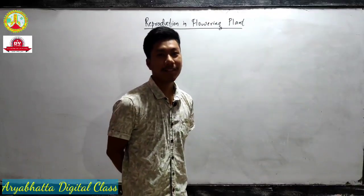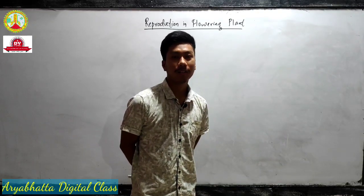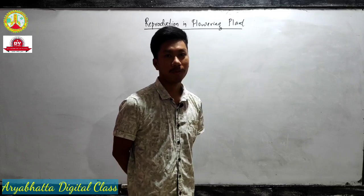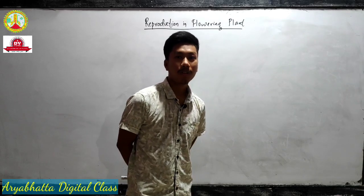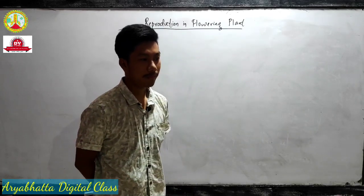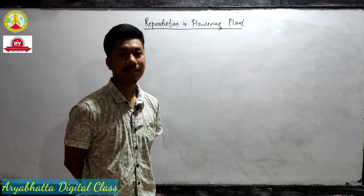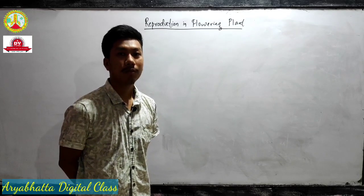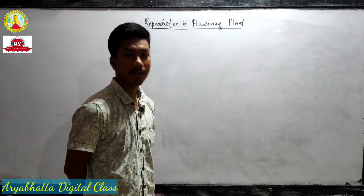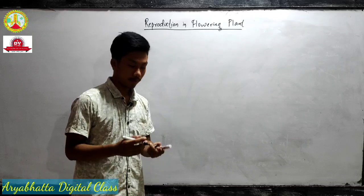Hello everyone, welcome back. In the last video lecture we discussed megasporogenesis and how the female gametophyte, the embryo sac, is developed. We have also covered the structure of the flower, microsporogenesis, megasporogenesis, and pollination. Now we will discuss fertilization — the male is ready, the female is ready, pollination has taken place, so now fertilization will take place.